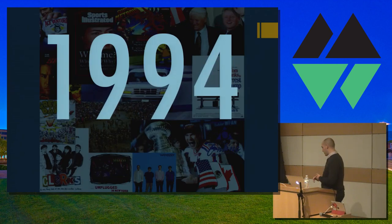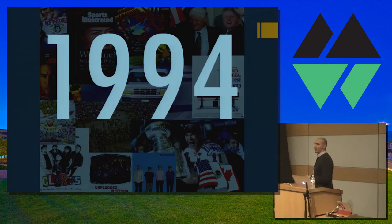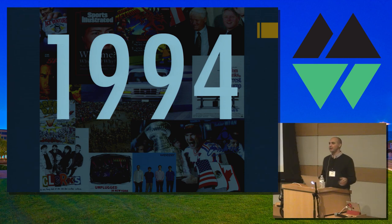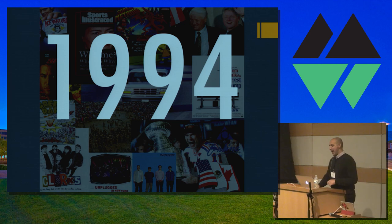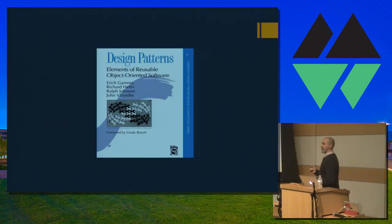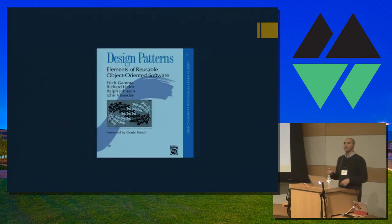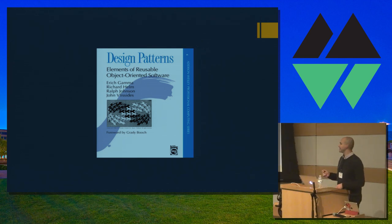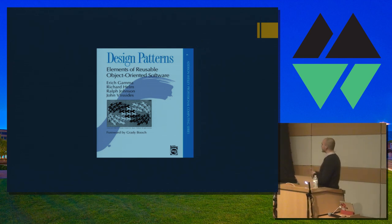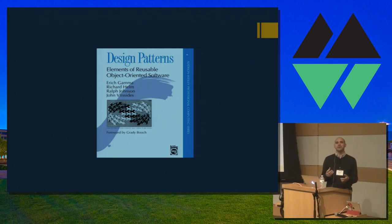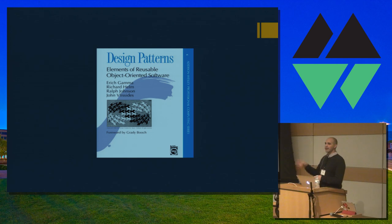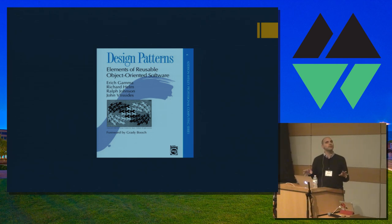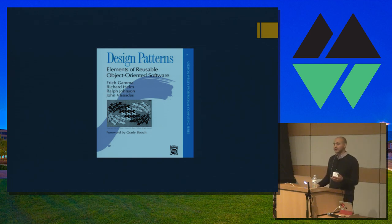Let's go back 20 years to 1994. Speed had just come out, the Blue Album — it was a good time. How many of you guys remember Design Patterns? This was a really influential book. For those of us doing C++ or even Java programming at the time, these four authors — the gang of four — got together and looked at how people were solving various problems in software development, and they codified those patterns into a book. It's still an influential book today.